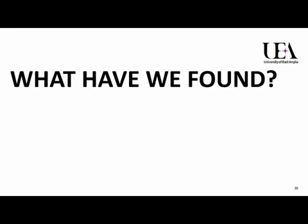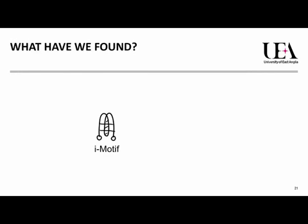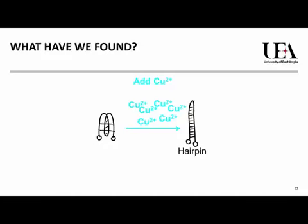What have we found? Well, if you take that piece of folded DNA at acidic pH in the form of an i-motif, we can add copper 2 cations. These are a salt form of copper, which are blue coloured — you may have even made crystals out of them in school science classes. When we add the copper, the DNA folds into a completely different structure. We call this a hairpin because it resembles a Kirby grip or a bobby pin. The structure is still folded up, but is a completely different shape to what it was before.